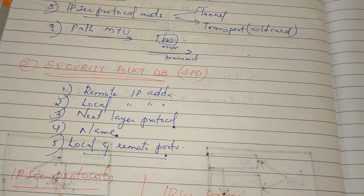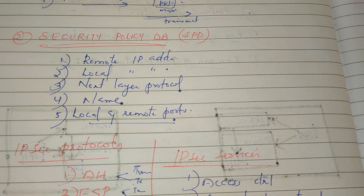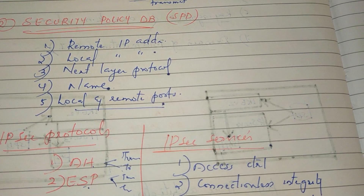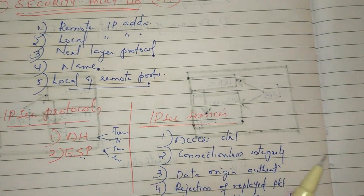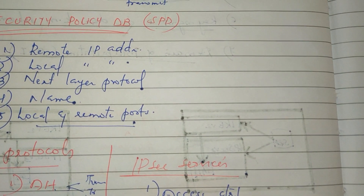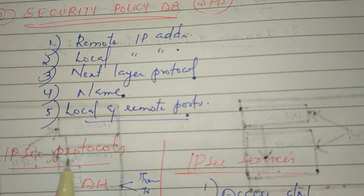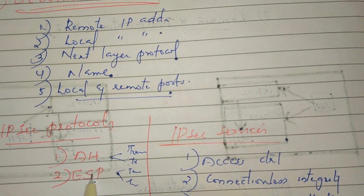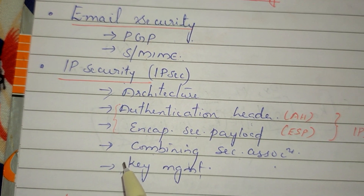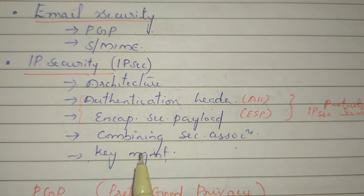So we have covered the first document group — Architecture — and explained the two protocols and IP security services. Next, we will cover the Authentication Header (AH) and ESP, which will be covered in the next class.